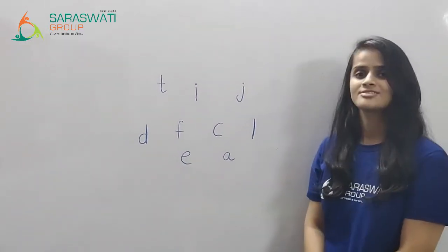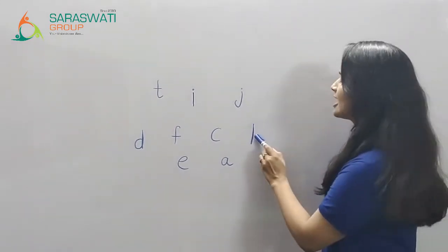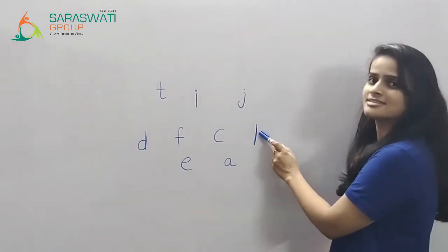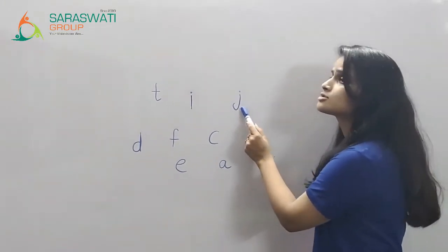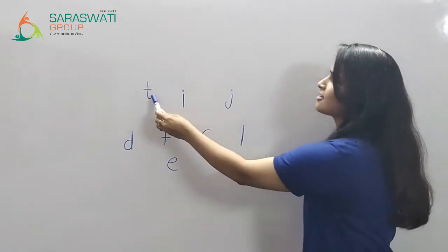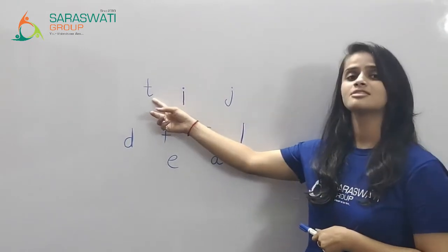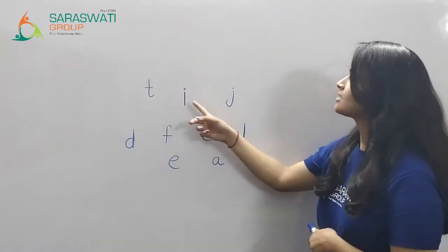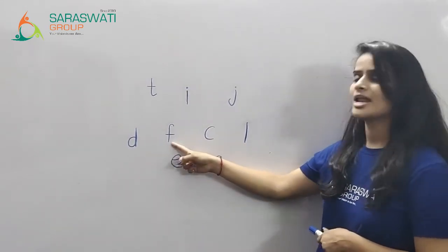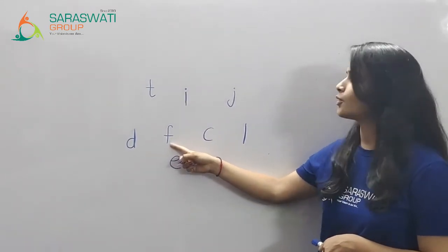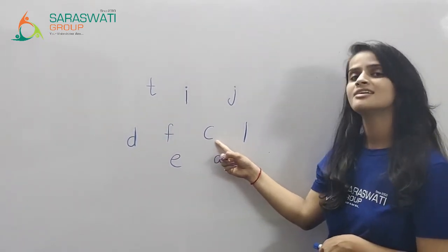Let's revise our letters. So kids, which letter is this? Yes, this is lowercase L. Which letter is this? This is lowercase J. Which letter is this? This is lowercase T. Which letter is this? This is lowercase I. Which letter is this? This is lowercase F. Which letter is this? This is lowercase C.